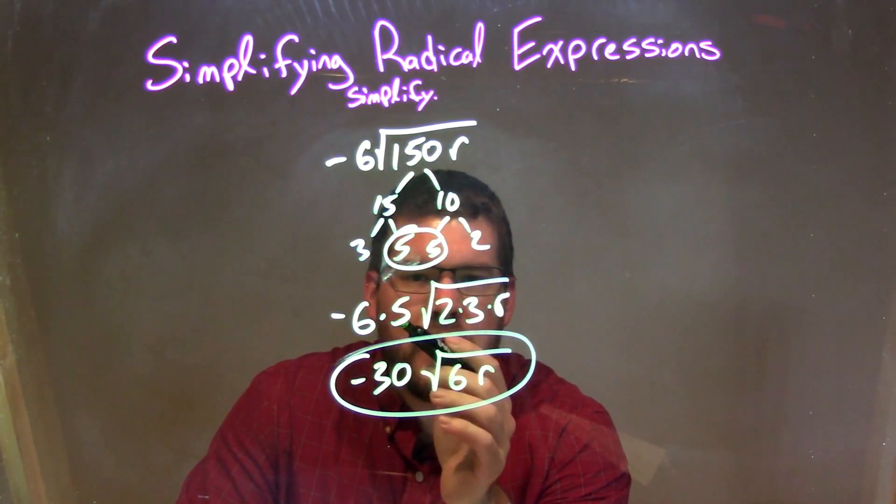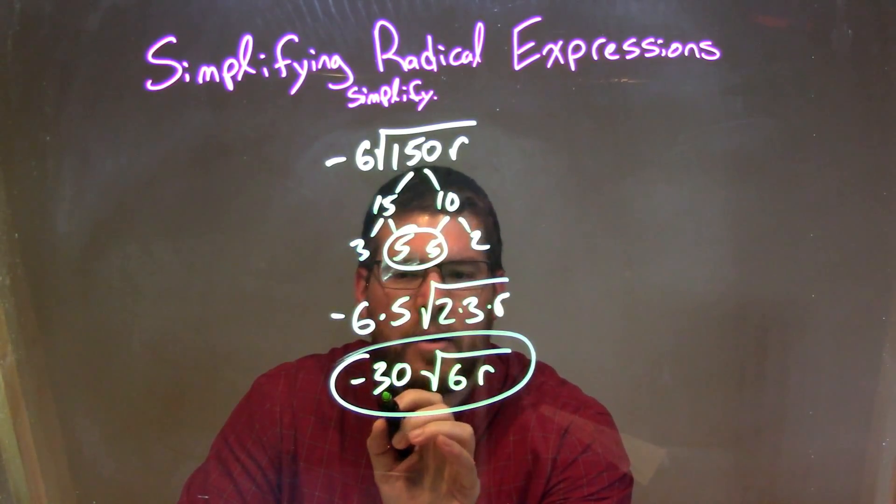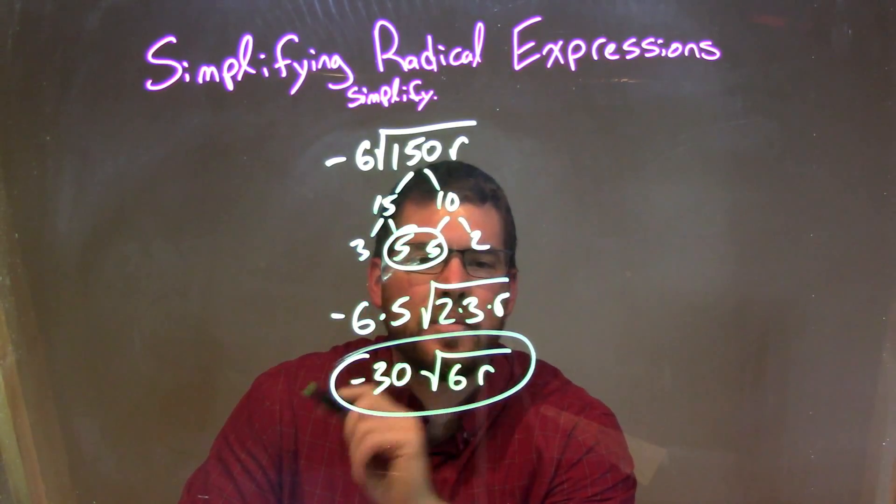giving me negative 6 times 5 times the square root of 2 times 3 times R. Simplified, I get my final answer of negative 30 times the square root of 6R.